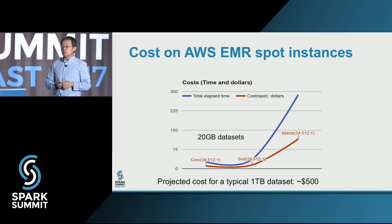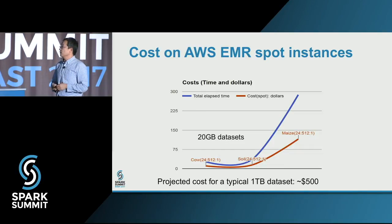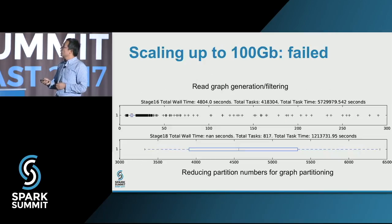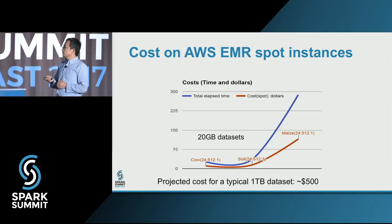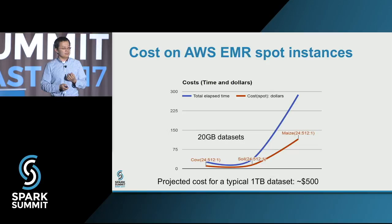We also estimated how much it costs to run the metagenome pipeline on Amazon using spot instances. For typical cow and soil metagenome data, the cost is much less than for the maize transcriptome dataset. If one terabyte of data is just cow or soil type, we expect only $500 to analyze one terabyte — which is actually not bad. We were pretty happy with this number until we tried to actually do it.